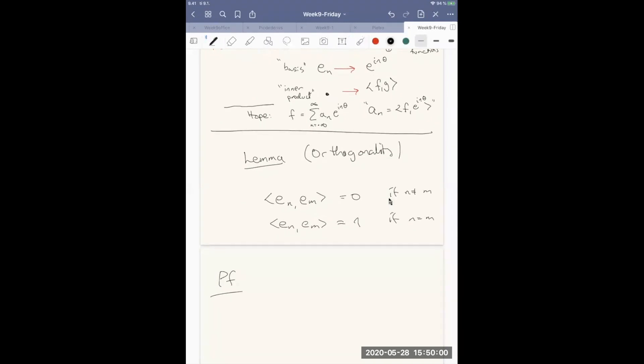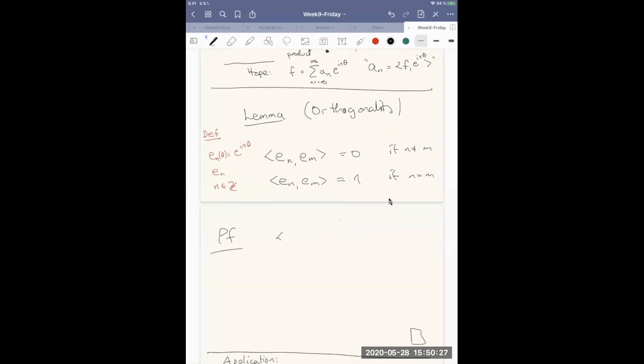So if we take, and I want to abbreviate for this discussion now, define for us en theta. This is a function which is e to the i n theta. So the basis this way can still be denoted by en, but this time n is an integer, any integer. So let's compute these. This is a straight computation. So the inner product of en and em is 1 over 2 pi integral from 0 to 2 pi e to the i n theta times the conjugate of the other one e to the minus i m theta. So this is 1 over 2 pi integral from 0 to 2 pi e to the i n minus m theta d theta.